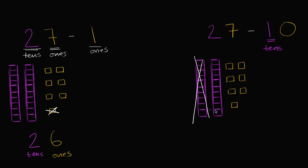How many tens am I left with? Well, now I only have one full group of 10. So I have one 10. And how many ones do I have? I still have seven ones. So 27 minus 10 is one 10 and seven ones, or 17.